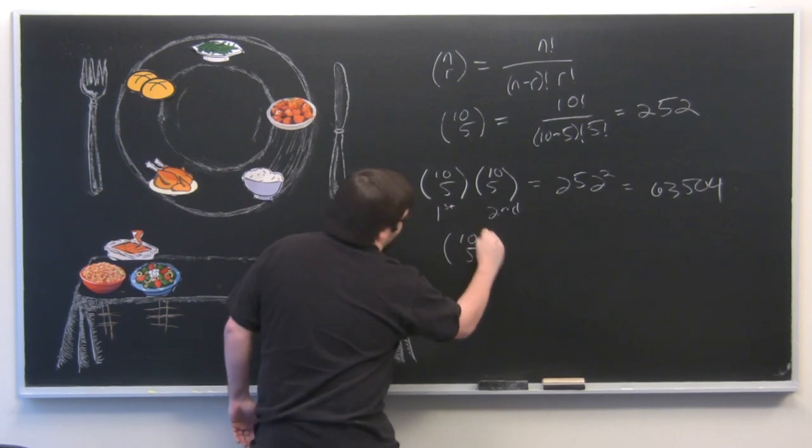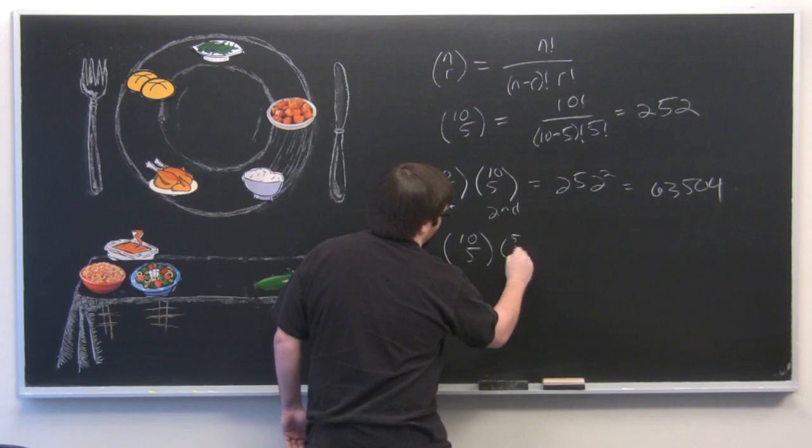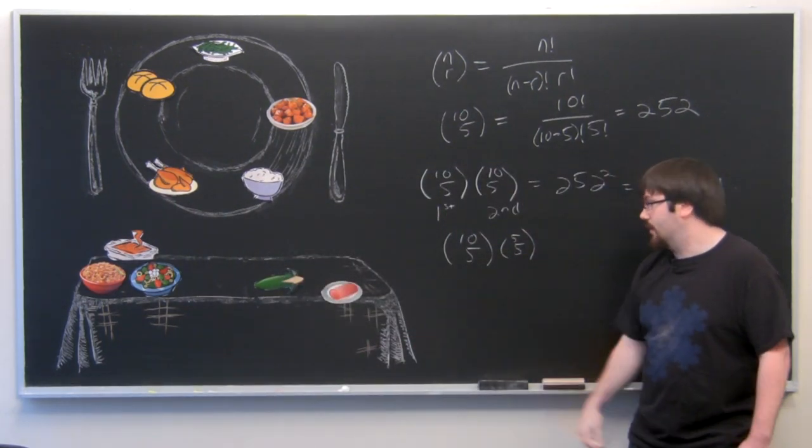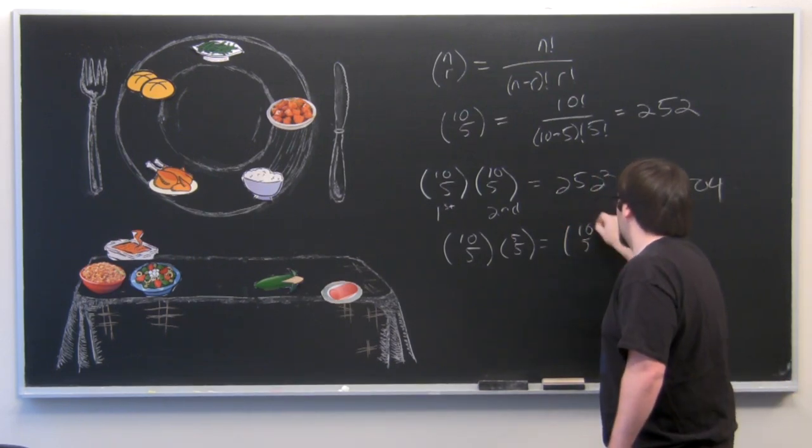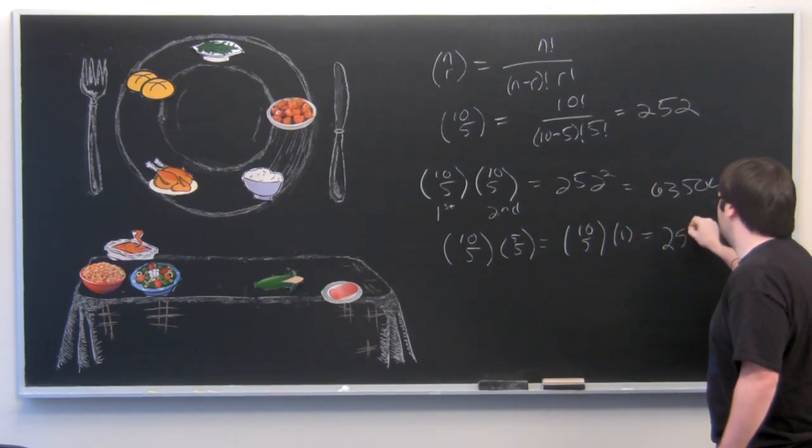So it actually doesn't change. So you had ten choose five for your first, and then you're actually only going to have five choose five for your second, if you want to choose the other five that you hadn't chosen originally. But this is just equal to ten choose five times one. So again, we're back at 252.